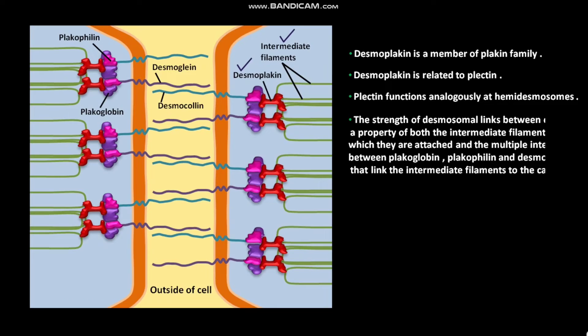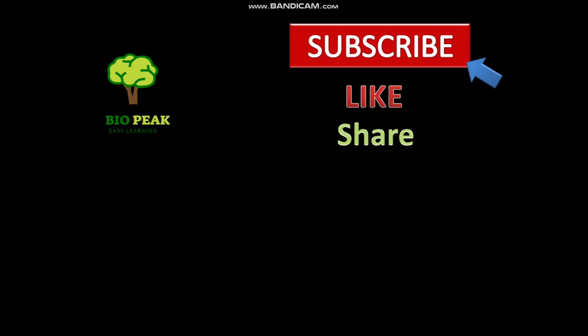The strength of desmosomal links between cells is a property of both the intermediate filaments to which they are attached and the multiple interactions between Placoglobin, Placophylline and Desmoplacin that link the intermediate filaments to the catherines.